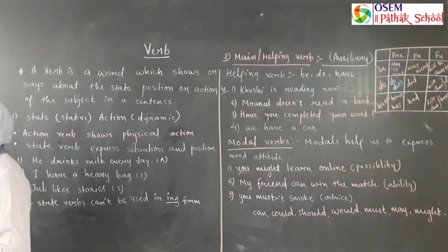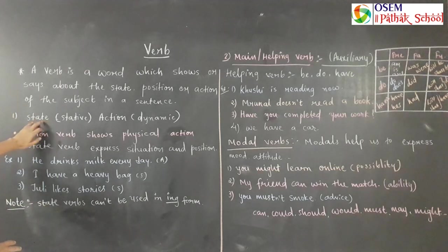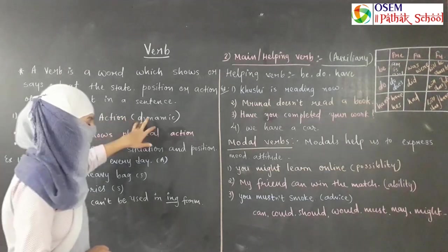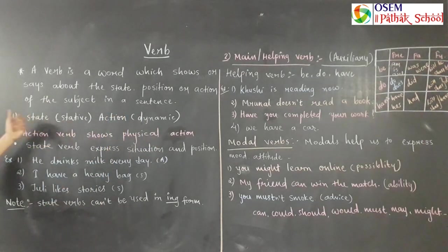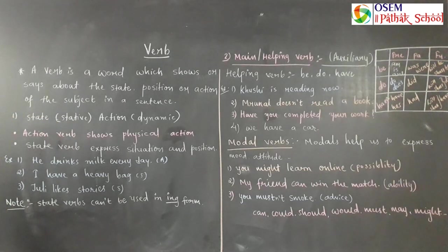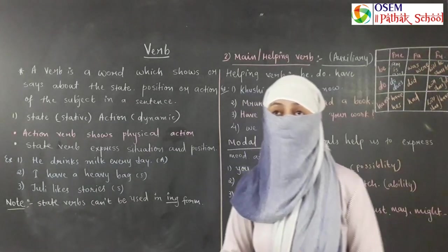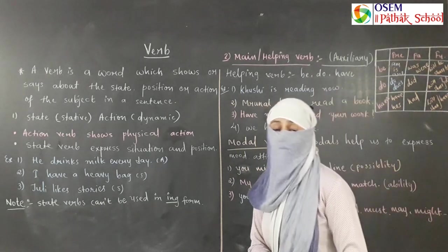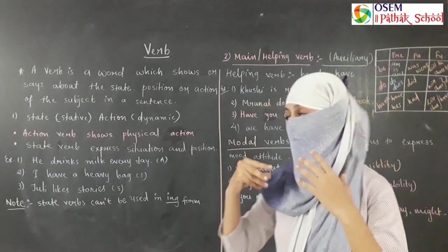We have different types of verb. The first one is state verb and action verb, sometimes called a dynamic verb. An action verb shows physical action — something you can observe. For example, 'I am teaching you' — you can see the physical action happening.